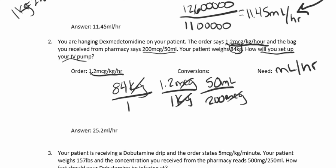We multiply across the top and across the bottom. 84 times 1.2 times 50 gives us 5,040, divided by the bottom: 1 times 200. Our answer is 25.2 mL per hour.